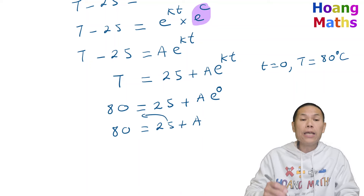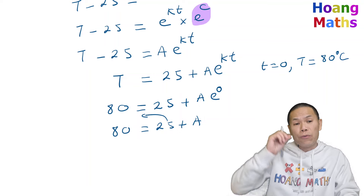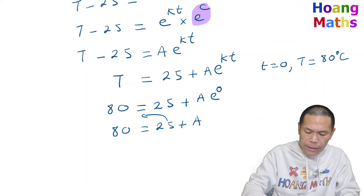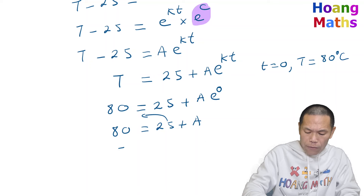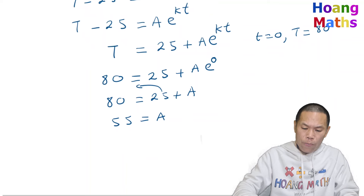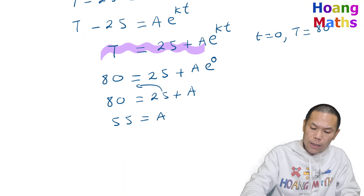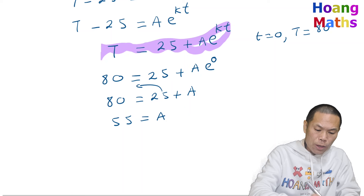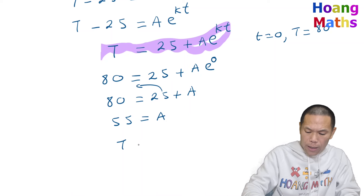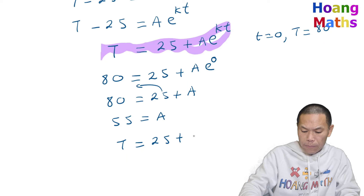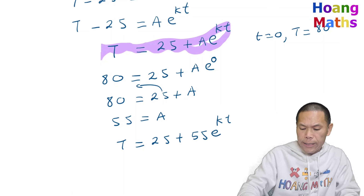Therefore the equation so far is T equals 25 plus 55·e^(kt). Now we need to find the value of k.